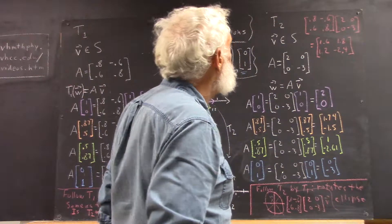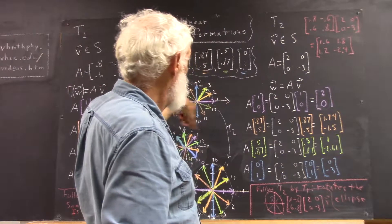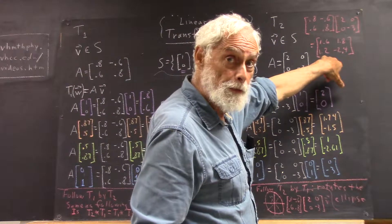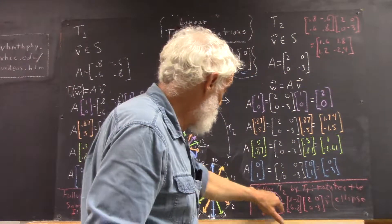Now, if we multiply all of these vectors by this matrix, we're going to get something that looks like this.